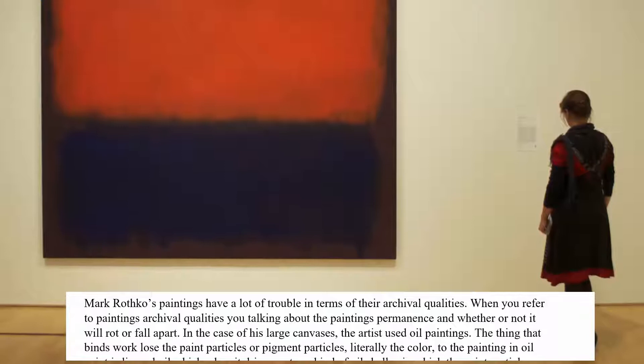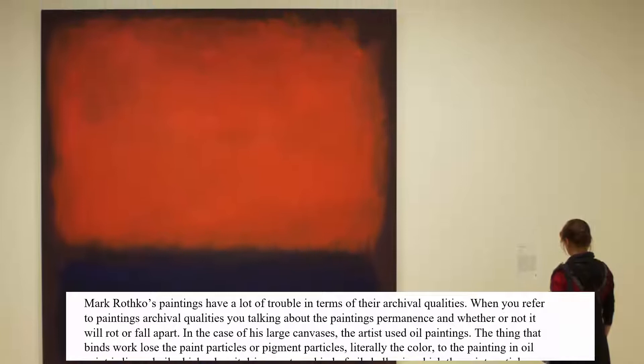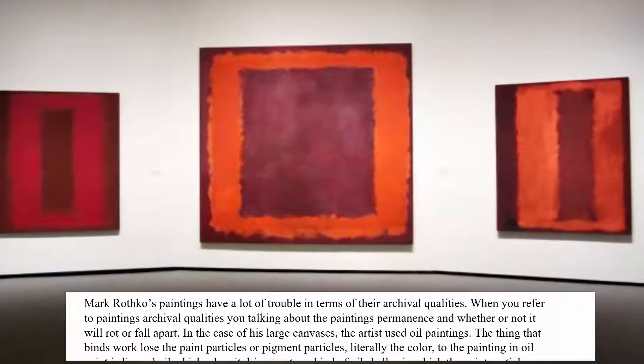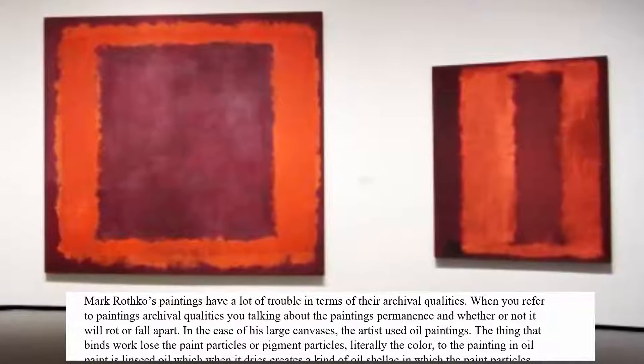Rothko's paintings have a lot of trouble in terms of being archival. When you refer to a painting in terms of its archival qualities, you're talking about how permanent it is, whether or not it's going to rot or fall apart. In the case of these big canvases, the artist used oil paint, and the thing that binds the pigment or paint particles to the canvas is linseed oil.